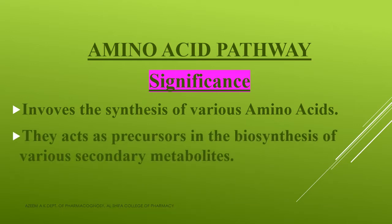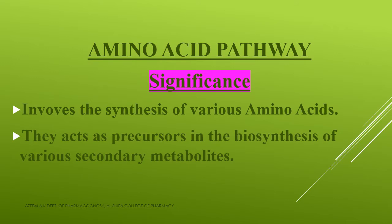The second significance is that these amino acids act as precursors in the biogenesis of various secondary metabolites. Secondary metabolites — we already studied — include alkaloids, glycosides, saponins, flavanoids, etc. These amino acids act as precursors in the biosynthesis of different secondary metabolites. That is the second significance of the amino acid pathway.